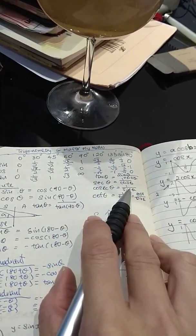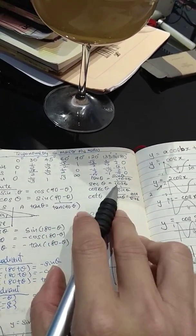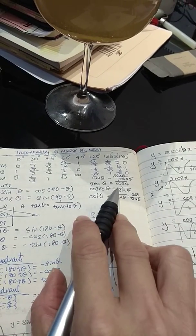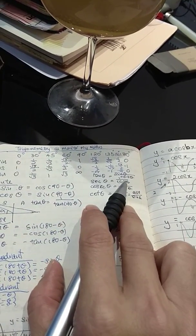Then sec theta equals to 1 over cos, cosec is 1 over sine, cotangent is 1 over tangent. Tangent theta is sine over cos.